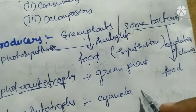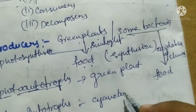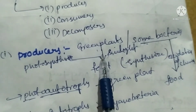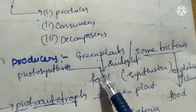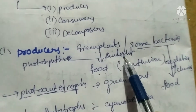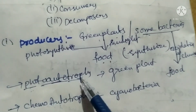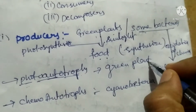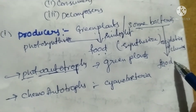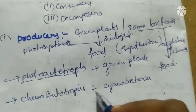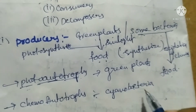For example, cyanobacteria fix nitrogen in leguminous plants by oxidation of ammonia. So producers are mainly the green plants which can synthesize their own food through the process of photosynthesis — called photo-autotrophs. Some bacteria that oxidize their own chemicals to prepare food are called chemo-autotrophs, for example cyanobacteria.